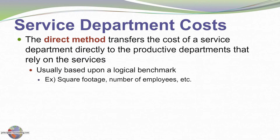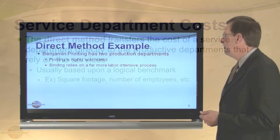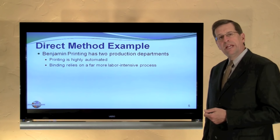The first is the direct method, which transfers the cost of a service department directly to the productive departments that rely on those services. It's usually based on a logical benchmark, such as the cost of janitorial services based on square footage of different departments in the manufacturing process. The cafeteria cost might be allocated based on the number of employees in each particular manufacturing area. Let's look at an example.